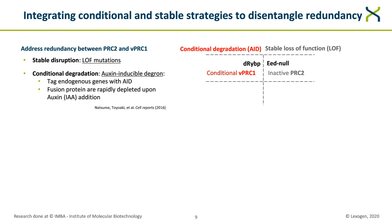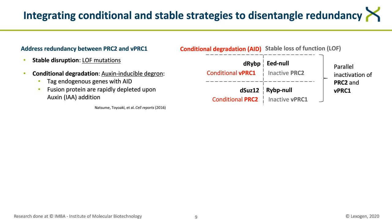We engineered three mouse embryonic stem cell lines bearing conditional and stable genetic perturbations. In the DRYBP-EED null cell line, DRYBP indicates a degron-tagged RYBP for conditional disruption of variant PRC1, while EED null indicates PRC2 is stably inactive. We also generated the deSUC12-RYBP null cell line where PRC2 is rendered conditional by tagging SUC12 with the AID degron while variant PRC1 is stably disrupted. Using this approach, we could induce double depletion of PRC2 and variant PRC1 from both directions.